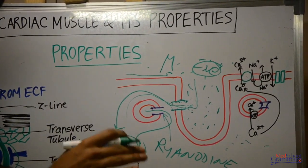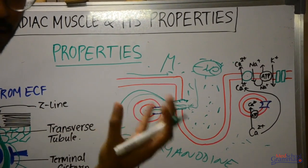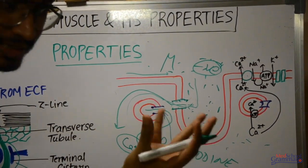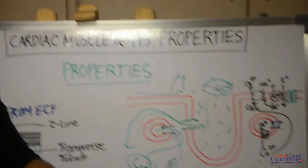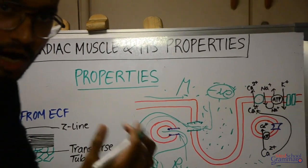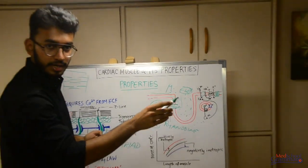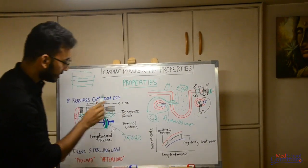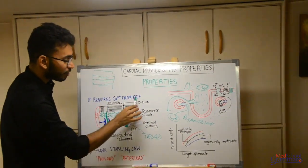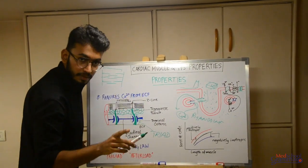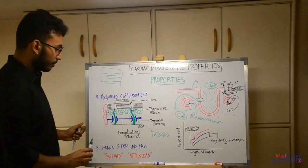So in systole there is increased calcium, and in diastole there is decreased calcium. This is how the heart beats. This completes the excitation-contraction coupling in the heart and explains the property that cardiac muscle requires calcium from the ECF while skeletal muscle does not.